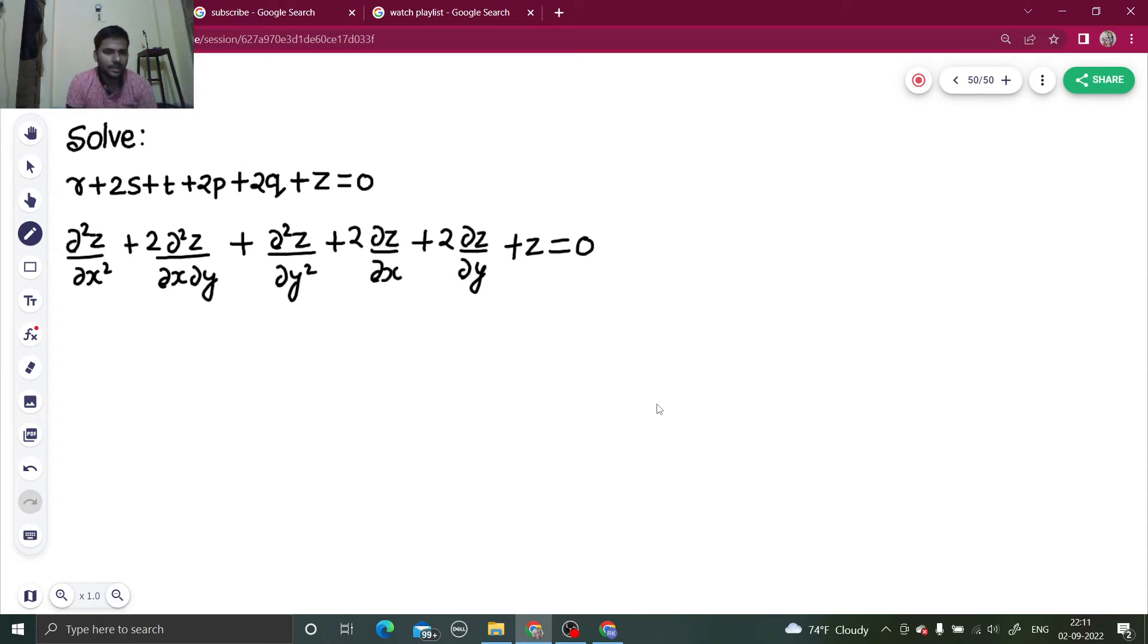Now how can we write this? If we write del by del x as capital D and del by del y as D dash, we can write this as D square plus 2DD dash, third term is D dash square.